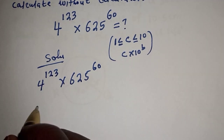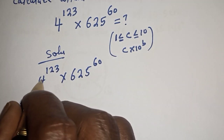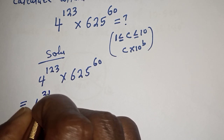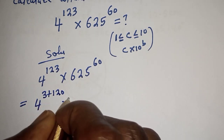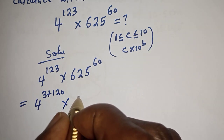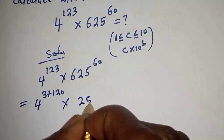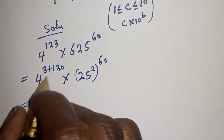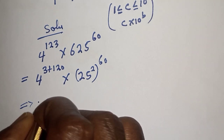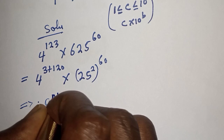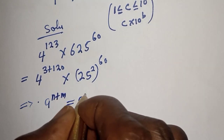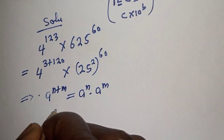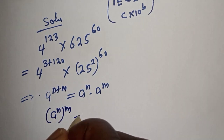We have 4 raised to power 123, which can be written as 4 raised to power 3 plus 120, multiplied by 625, which can be written as 25 squared, to the power of 60. Note that a raised to power n plus m equals a raised to power n, multiplied by a raised to power m.